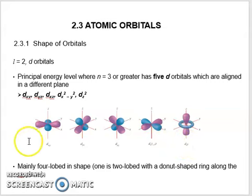We have four orientations that have the shape of four loops, and one orientation with the shape of two loops with a donut-shaped ring along the xy-plane.